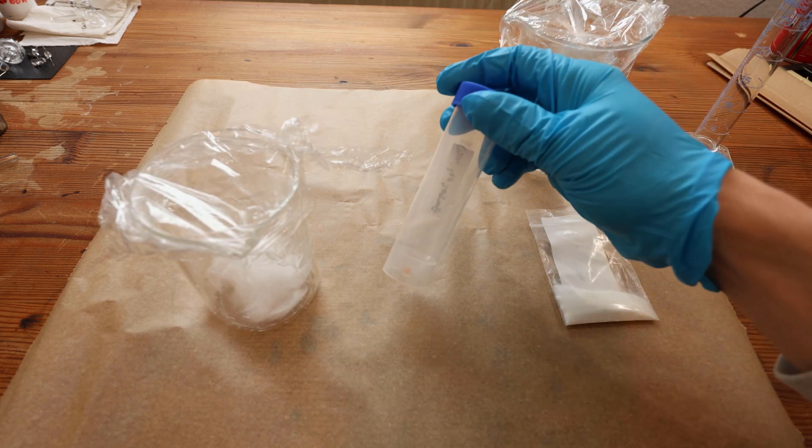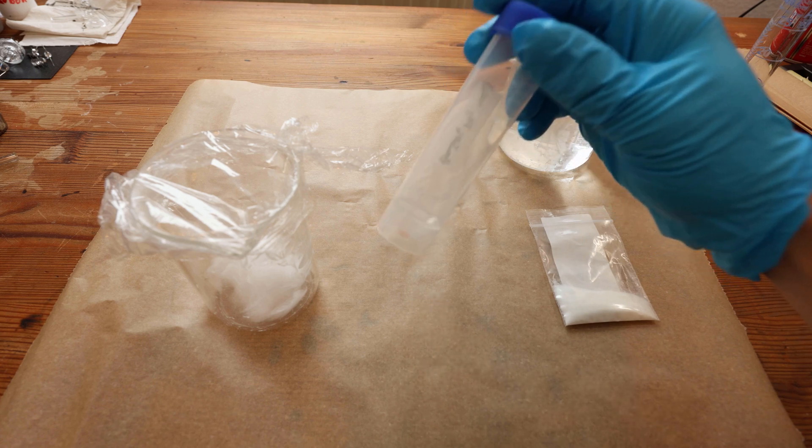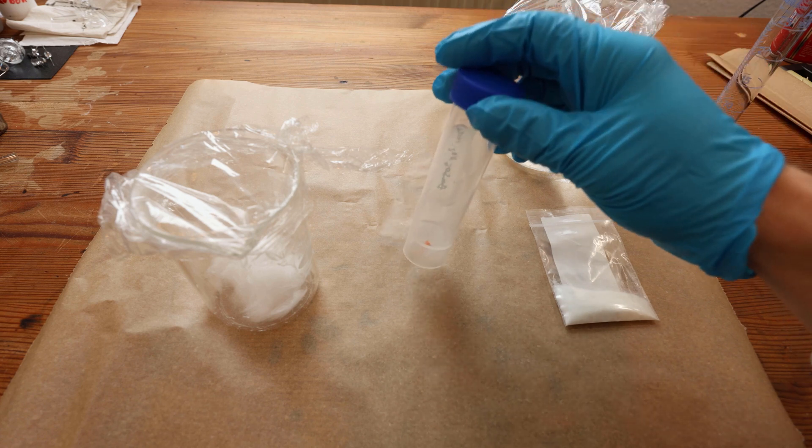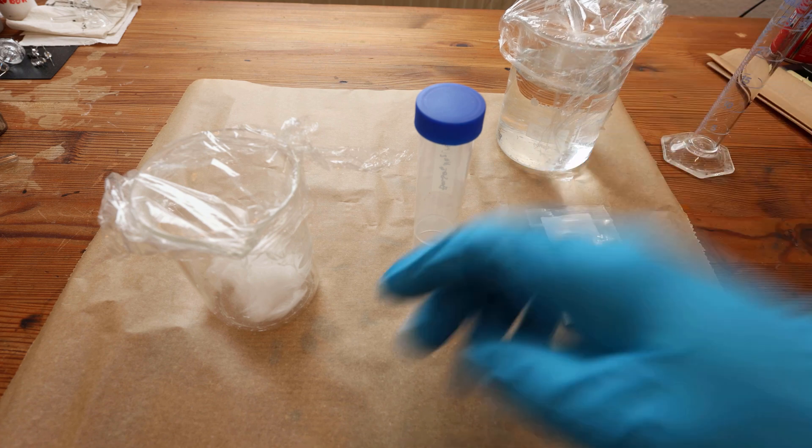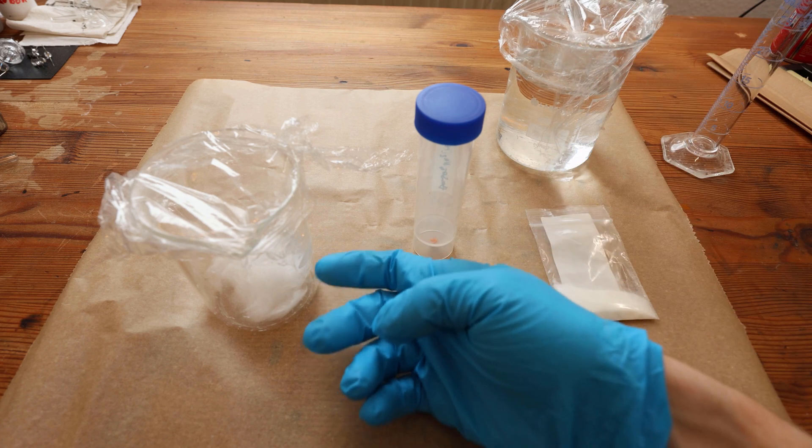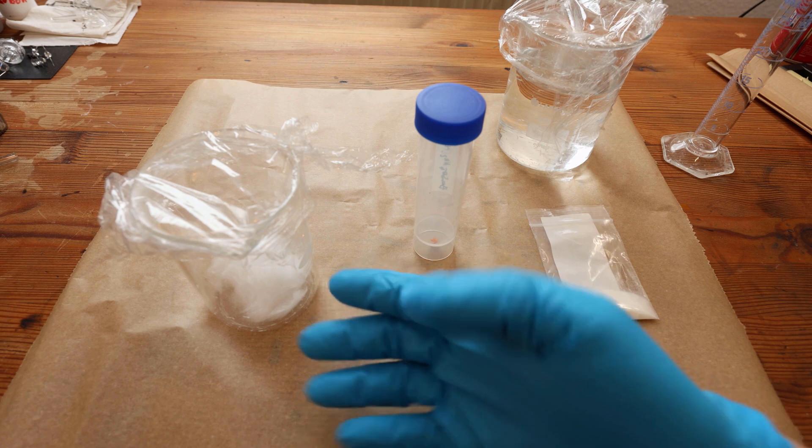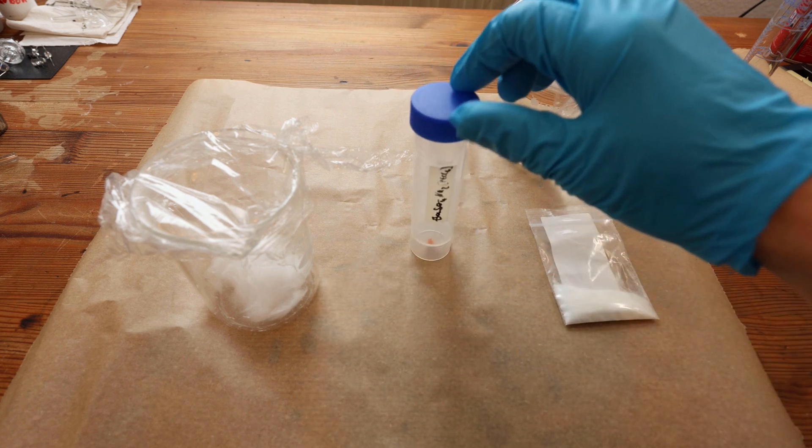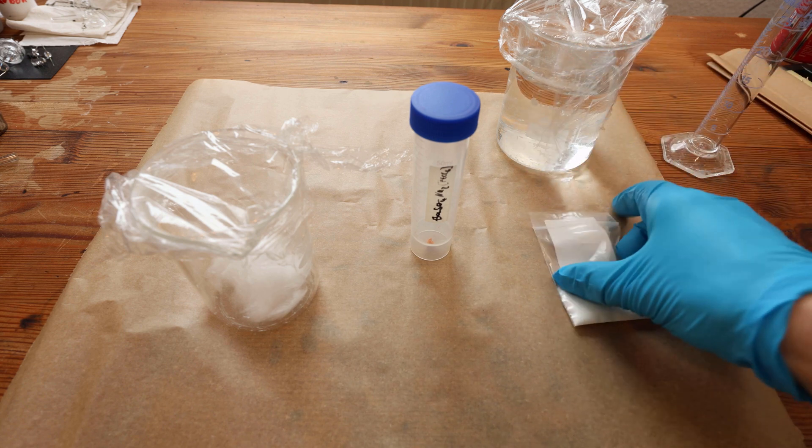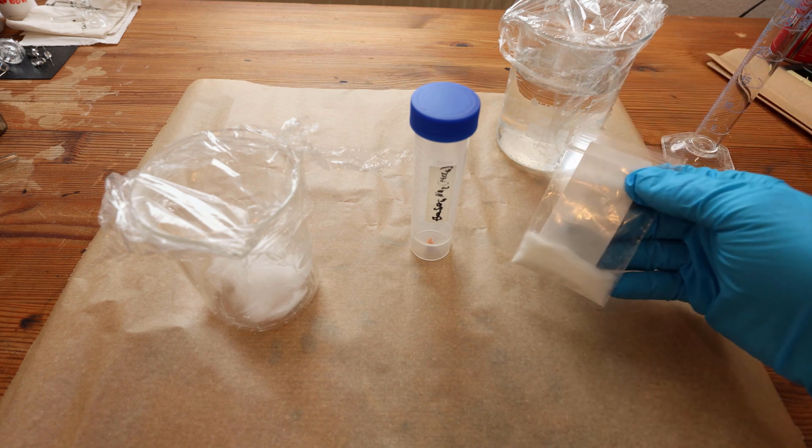I have here some sodium hexachloroplatinate and I'm going to dissolve this in some water and fill this in here, fill this until the quartz wool is covered. Then I'm going to reduce this chemical back to platinum by using ascorbic acid.